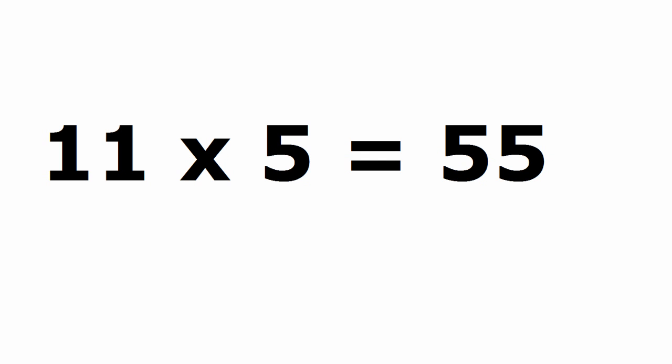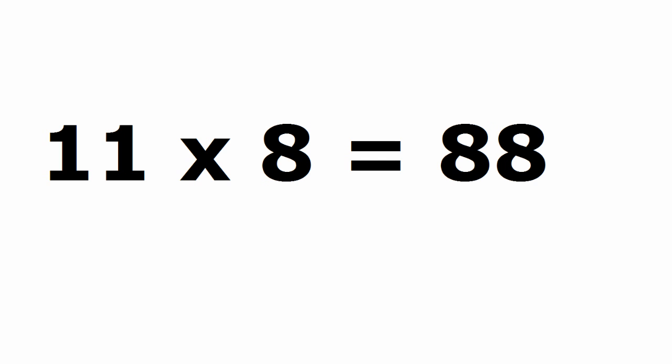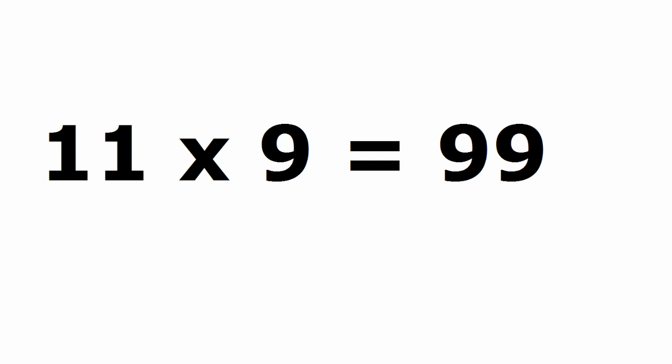Eleven times five is fifty-five. Eleven times six is sixty-six. Eleven times seven is seventy-seven. Eleven times eight is eighty-eight. Eleven times nine is ninety-nine.